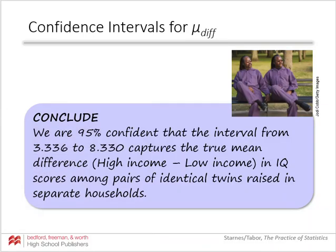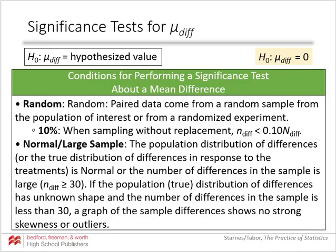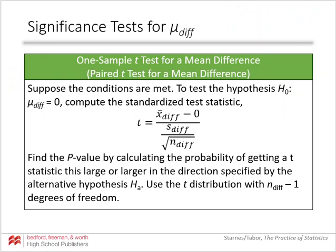Now let's look at hypothesis tests, also called a paired t-test. Typically, our null hypothesis will be that the mean of the difference is zero — meaning there's no difference. We have the same conditions as for the confidence interval. The test statistic t is calculated as the sample mean of the difference minus zero (or whatever value is in the null hypothesis), divided by the standard deviation of the difference over the square root of n. Again, n is the number of pairs, and we use n minus one degrees of freedom.